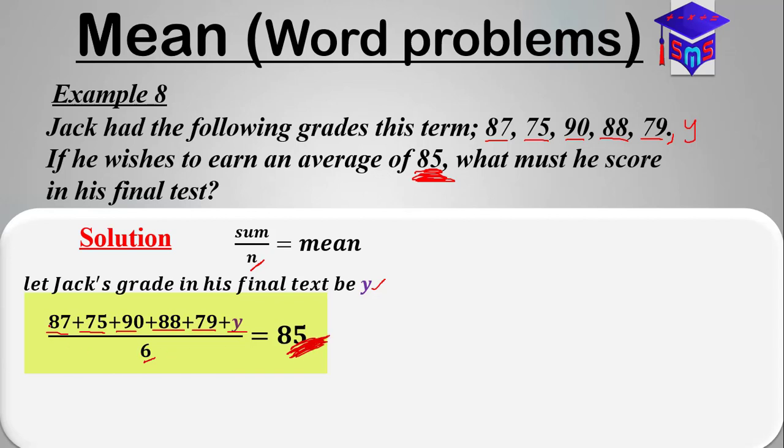When you simplify this, when you add all these values, you'll be getting 419 plus y all over 6 equals 85. So we solve for y by multiplying both sides by six.